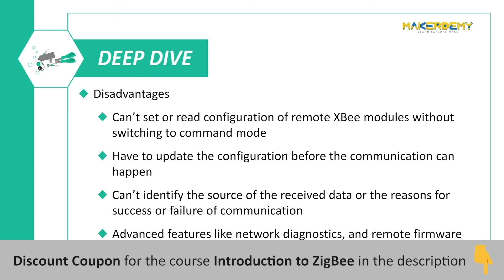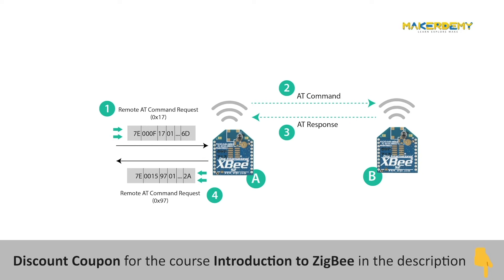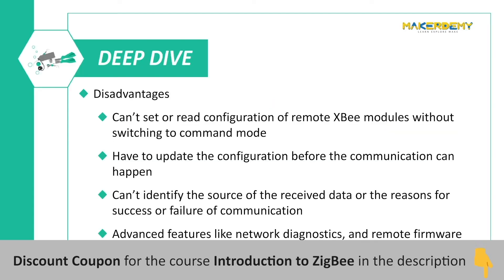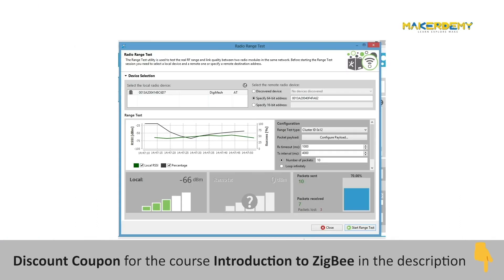Now let us look at the disadvantages of transparent mode. One, cannot set or read the configuration of remote XBee devices in the network without switching to command mode, thus pausing the function of an XBee. Two, must first update the configuration to establish a new destination and transmit data. Three, cannot identify the source of received data as it does not include the sender's address. Four, received data does not include transmission details or reasons for success or failure. Five, does not offer advanced features like network diagnostics and remote firmware updates.